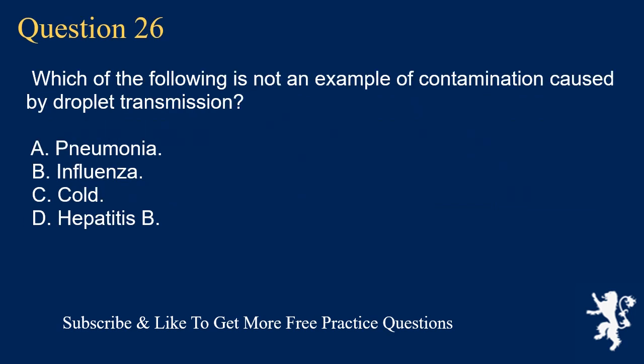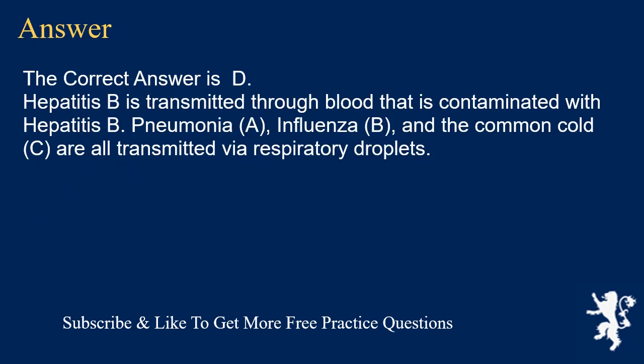Question 26. Which of the following is not an example of contamination caused by droplet transmission? A. Pneumonia. B. Influenza. C. Cold. D. Hepatitis B. The correct answer is D. Hepatitis B is transmitted through blood contaminated with hepatitis B. Pneumonia, influenza, and the common cold are all transmitted via respiratory droplets.